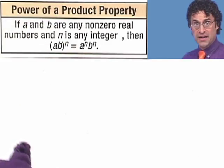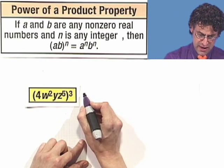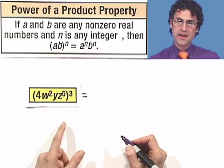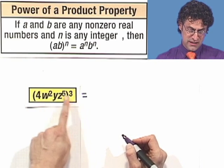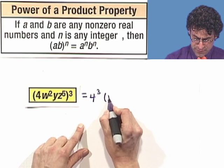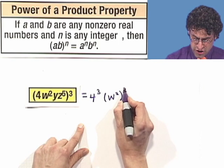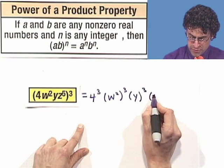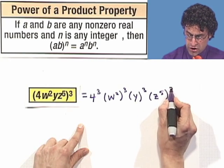So let's try an example together and see this in action. Let's simplify this expression. By the power of a product property, I'm multiplying lots of things together and then cubing the entire quantity, so I can just cube each factor. This equals 4 cubed, multiplied by w squared cubed, multiplied by y cubed, multiplied by z to the fifth cubed.